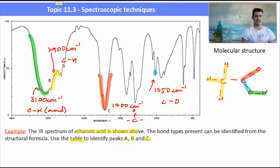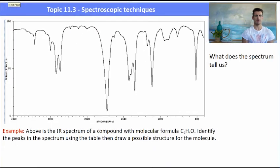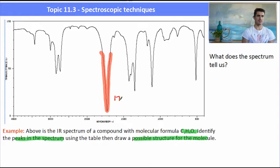Okay, another example. Above is the IR spectrum of a compound with a molecular formula C2H4O. Identify the peaks in the spectrum using the table, and then draw a possible structure for the molecule. So when you look at a spectrum like this, the first thing that should stand out to you is the big, broad peak at about 1750. That is due to a C double bond O, a carbonyl functional group.